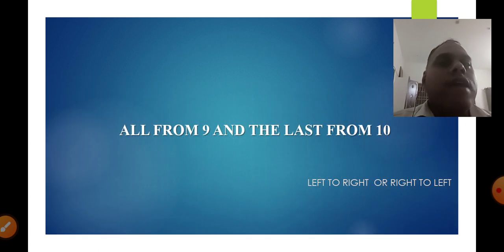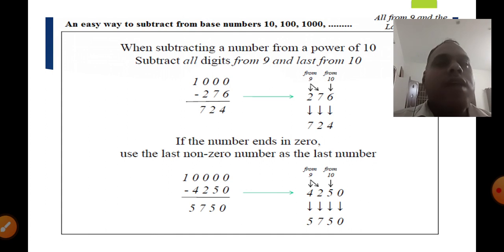The second sutra we will discuss is 'all from 9 and last from 10,' which works left to right or right to left. For example, we need to subtract 1000 minus 276. Usually we solve using the usual method as appearing here.